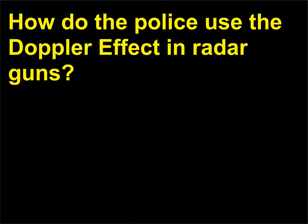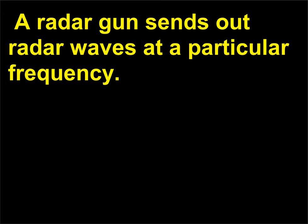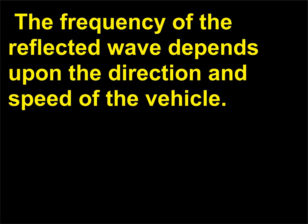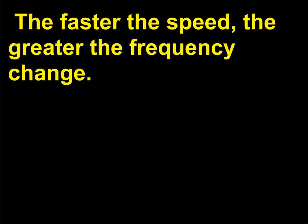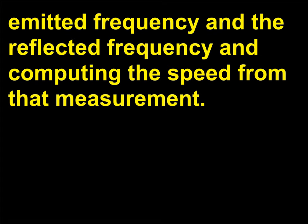How do the police use the Doppler effect in radar guns? The police use the Doppler effect when checking for speeding vehicles. A radar gun sends out radar waves at a particular frequency. As the radar wave hits a vehicle, the wave reflects back toward the radar gun at a different frequency. The frequency of the reflected wave depends upon the direction and speed of the vehicle. The faster the speed, the greater the frequency change. The radar gun determines the speed of the vehicle by measuring the difference between the emitted frequency and the reflected frequency and computing the speed from that measurement.